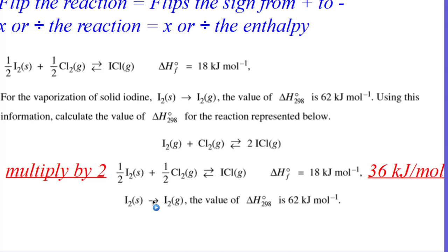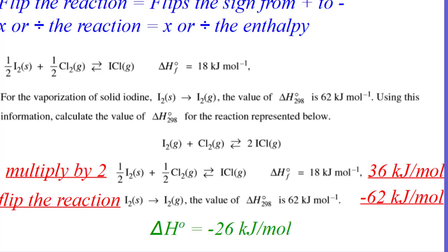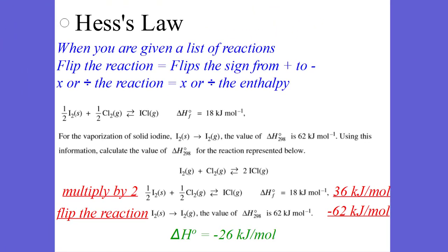What do we do to the final reaction? Well, we want iodine gas to be a reactant. So we have to flip that reaction. And when we flip that reaction, that positive 62 becomes negative 62. What do we do at the end of the day? We add those two enthalpies. Often it's called Hess's law of heat summation. So we add those and we get negative 26 kilojoules per mole for my heat, my enthalpy of my reaction.